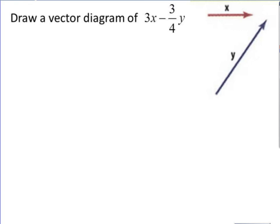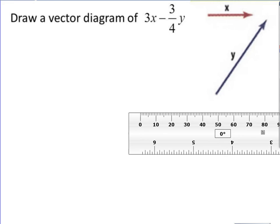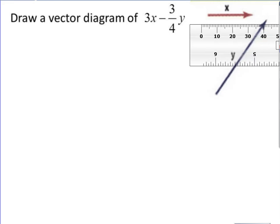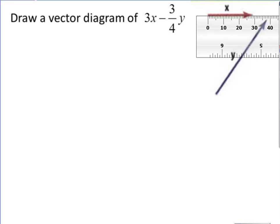So we need to draw a vector diagram of 3x minus three-fourths y. The first thing we need to do is figure out what the length of x is. X right now is 29 centimeters. If x equals 29 centimeters, then 3 times x is going to give us 87 centimeters.